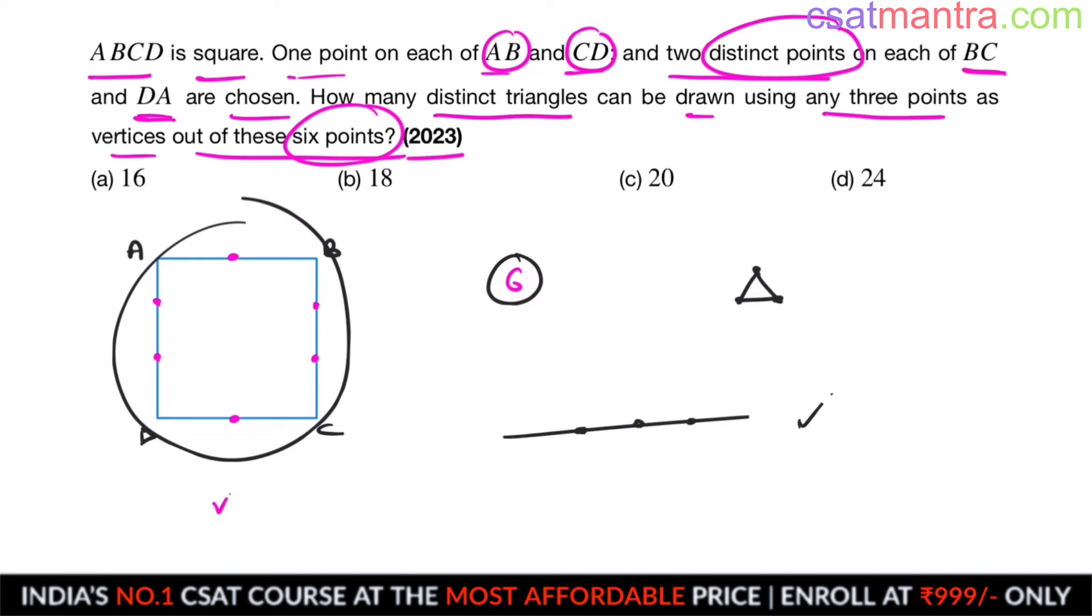So out of six points to draw triangle, we need three points. So how many ways we can choose three points out of six points? Six C three ways.